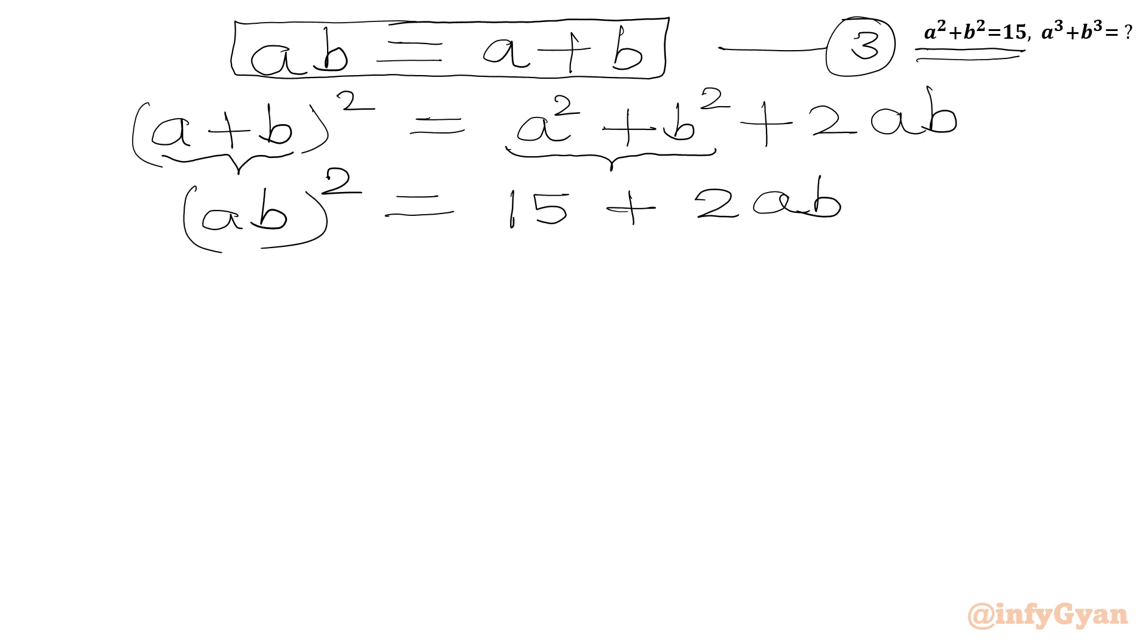Take all the terms to the left-hand side. We will get (ab)² minus 2ab minus 15 equals 0.